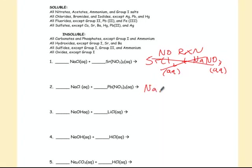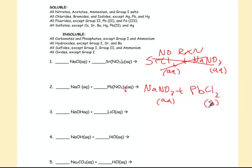The next one: NaNO₃ again — that's a nitrate, which is aqueous. The other product is PbCl₂. All chlorides are soluble except lead(II). So this one forms a solid, the reaction does occur, and you would have to balance it.